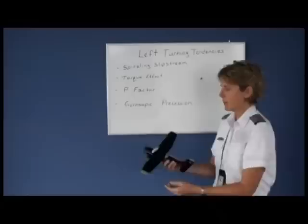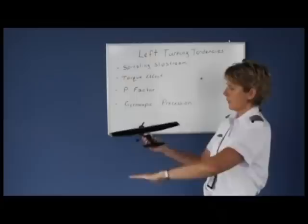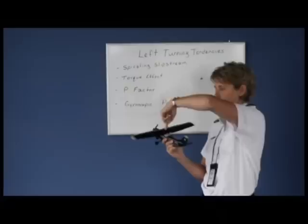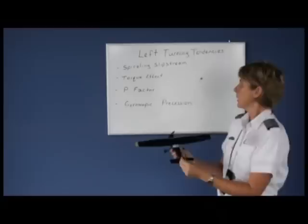The propeller spins clockwise, as seen from the pilot's seat. As the propeller spins clockwise, the air blasting backwards off the propeller makes a swirl around the airplane and strikes the tail on the left side. The airplane rotates around the vertical axis, causing the airplane to turn to the left. That is spiraling slipstream.